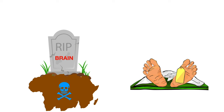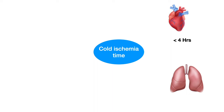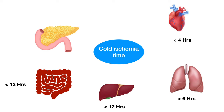Once brain death starts, the heart survives for less than 4 hours, lungs around 6 hours, liver and intestine around 12 hours, pancreas less than 18 hours, and kidneys less than 36 hours.